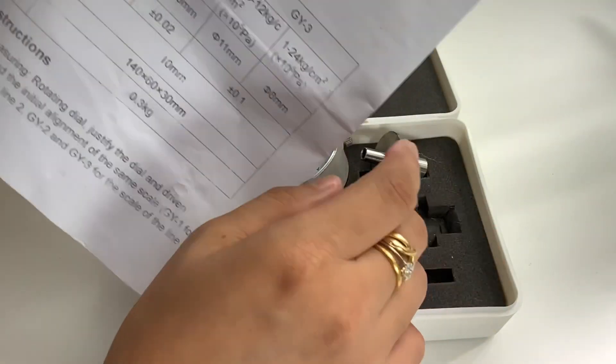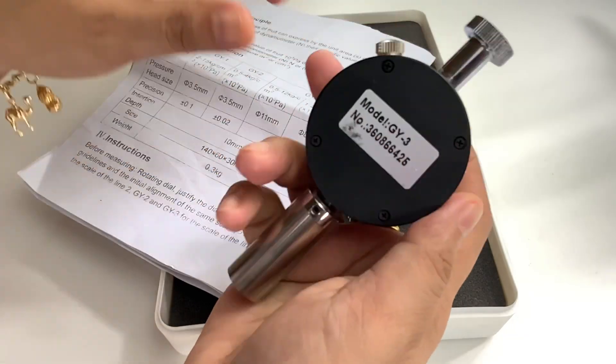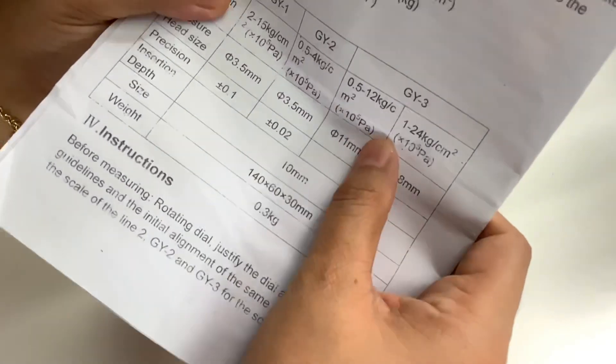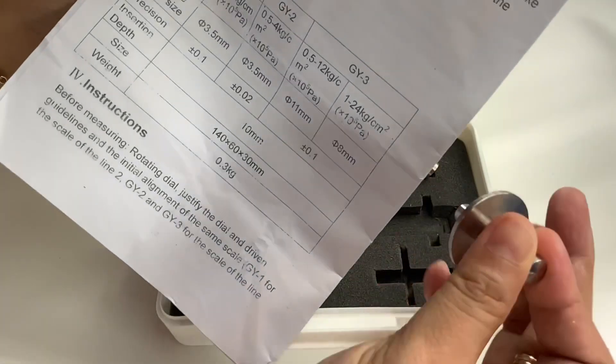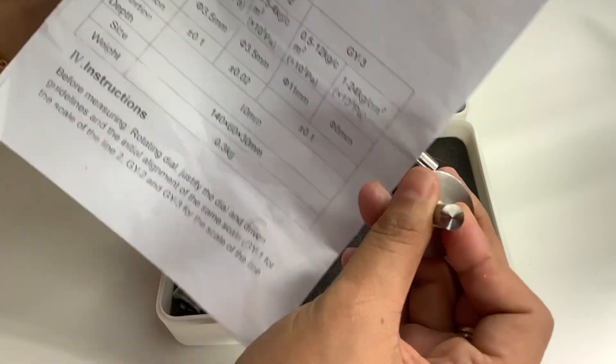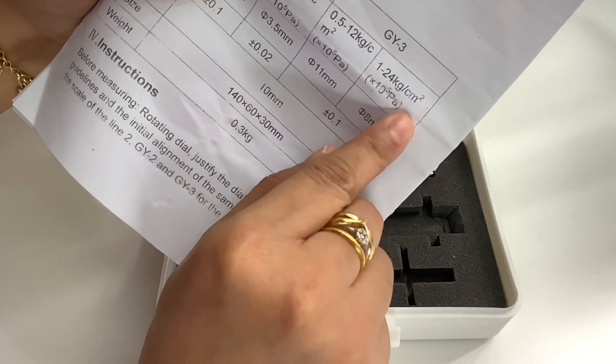Some soap makers use soil penometer, but for me, I use the fruit sclerometer model GY3. As you can see, this has two fixtures, 11mm and 8mm. This is the 8mm, and it can read 1 to 24 kg per cm².